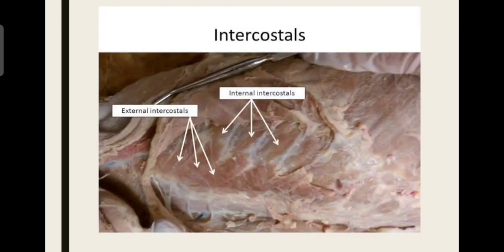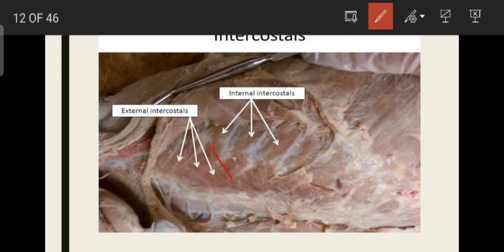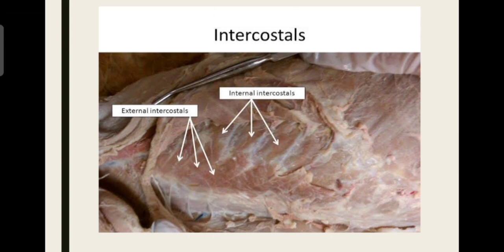Here are cadaveric images of the intercostal muscles. These are the internal intercostal muscles, and these are the external intercostal muscles. How to identify them? See the direction of the fibers. The external intercostal muscles go downwards, forwards, and medially. The internal intercostal muscles go in a different direction — at 90 degrees, right angles to each other. From the direction of the fibers, we can identify which muscle is external and which is internal intercostal muscle in the cadaver.